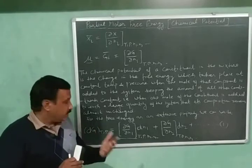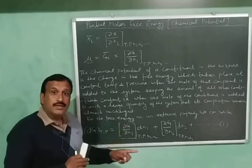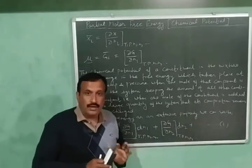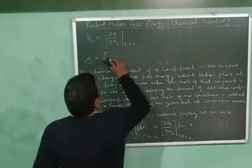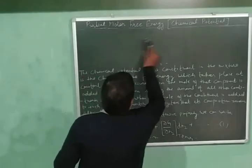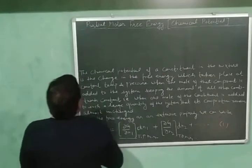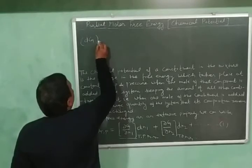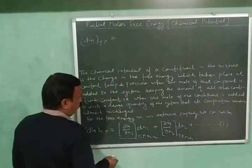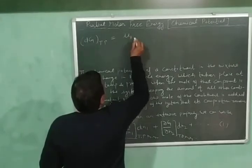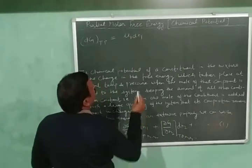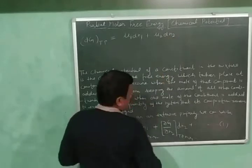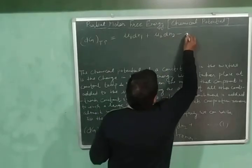Since (∂G/∂N₁) is μ₁ and (∂G/∂N₂) is μ₂, equation number 1 can be rewritten as: dG (at constant temperature and pressure) = μ₁·dN₁ + μ₂·dN₂. This is equation number 2.